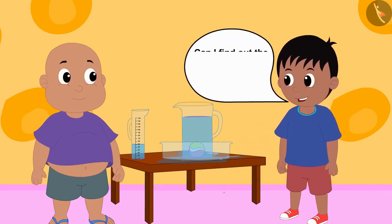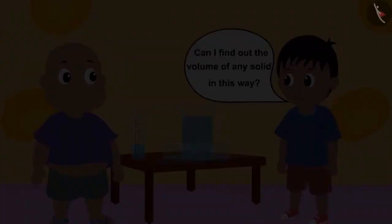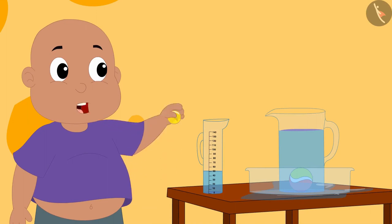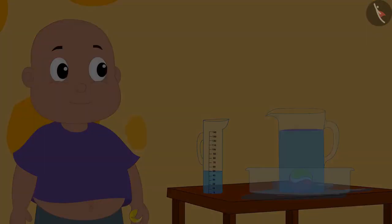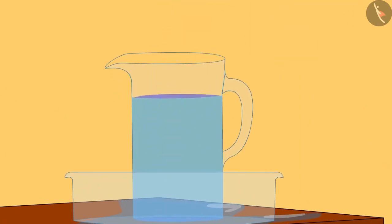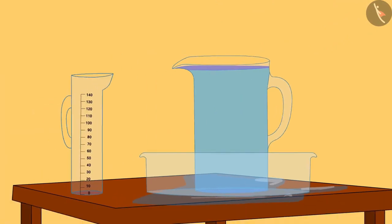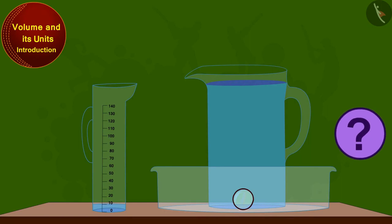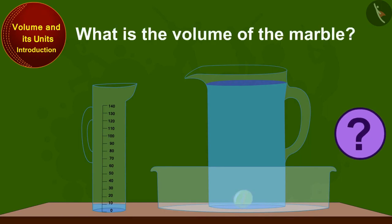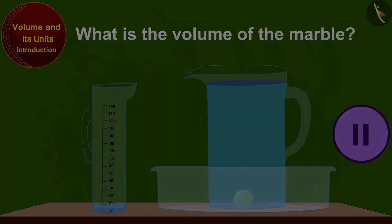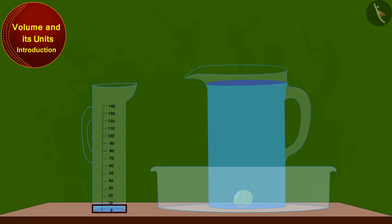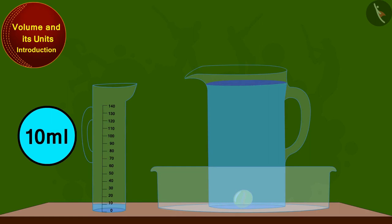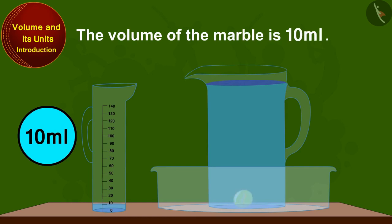This is so much fun. Can I find out the volume of any solid in this way? Absolutely. So let's now try to find the volume of this marble. Raju put a marble in the jug. The surface of the water filled in the measuring cup is at the 10 milliliter mark. Therefore, the volume of the marble is 10 milliliters.